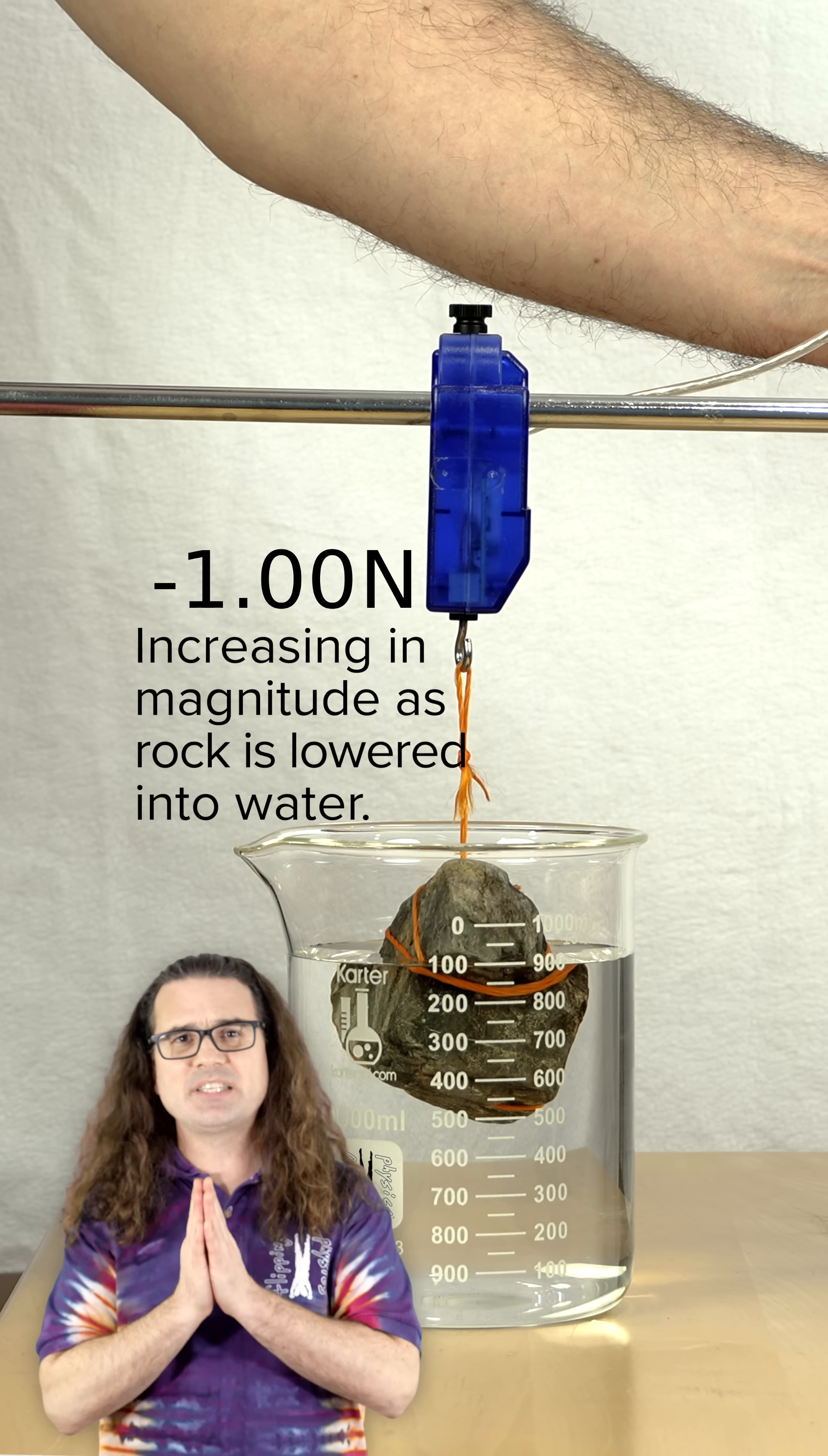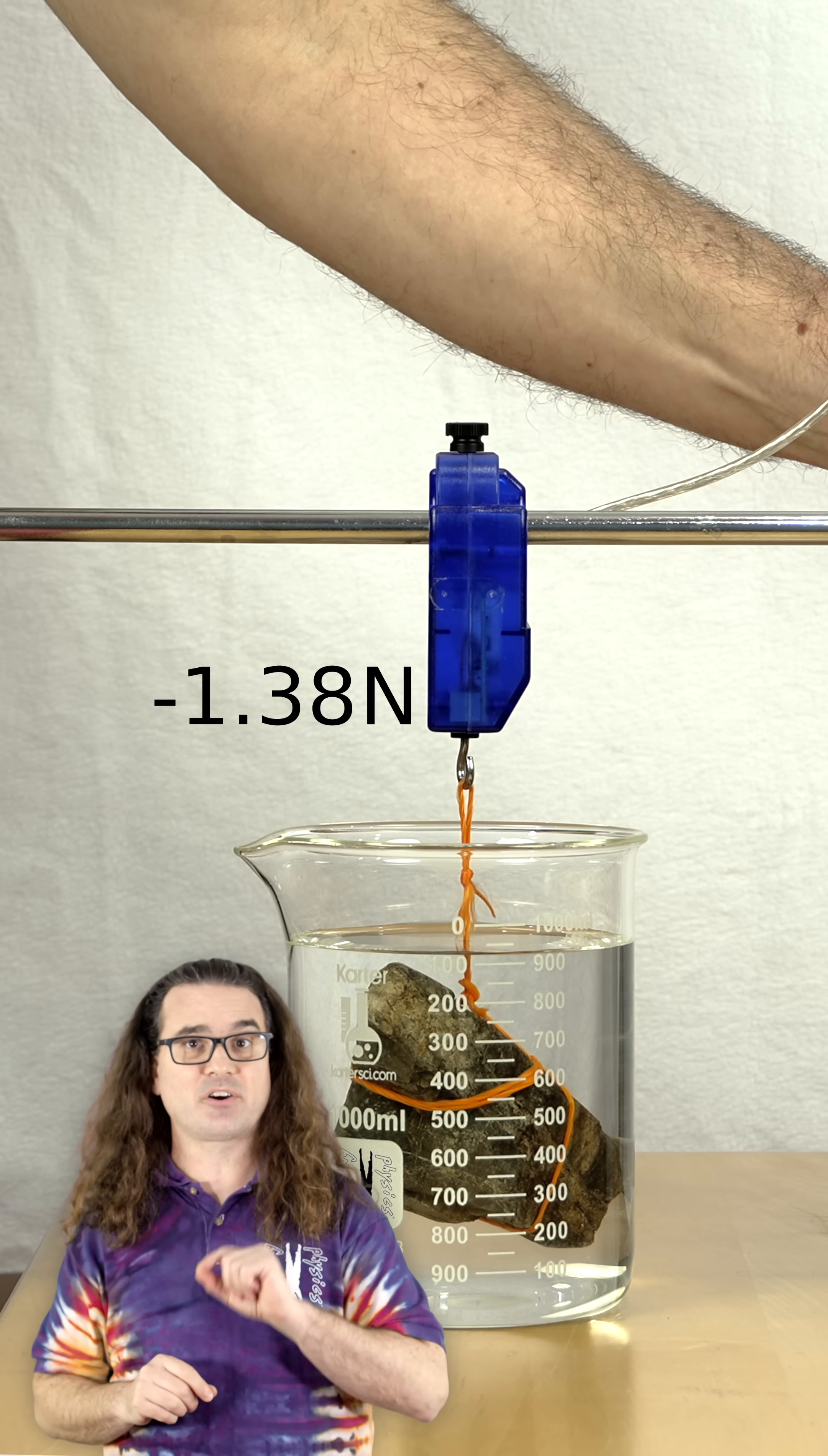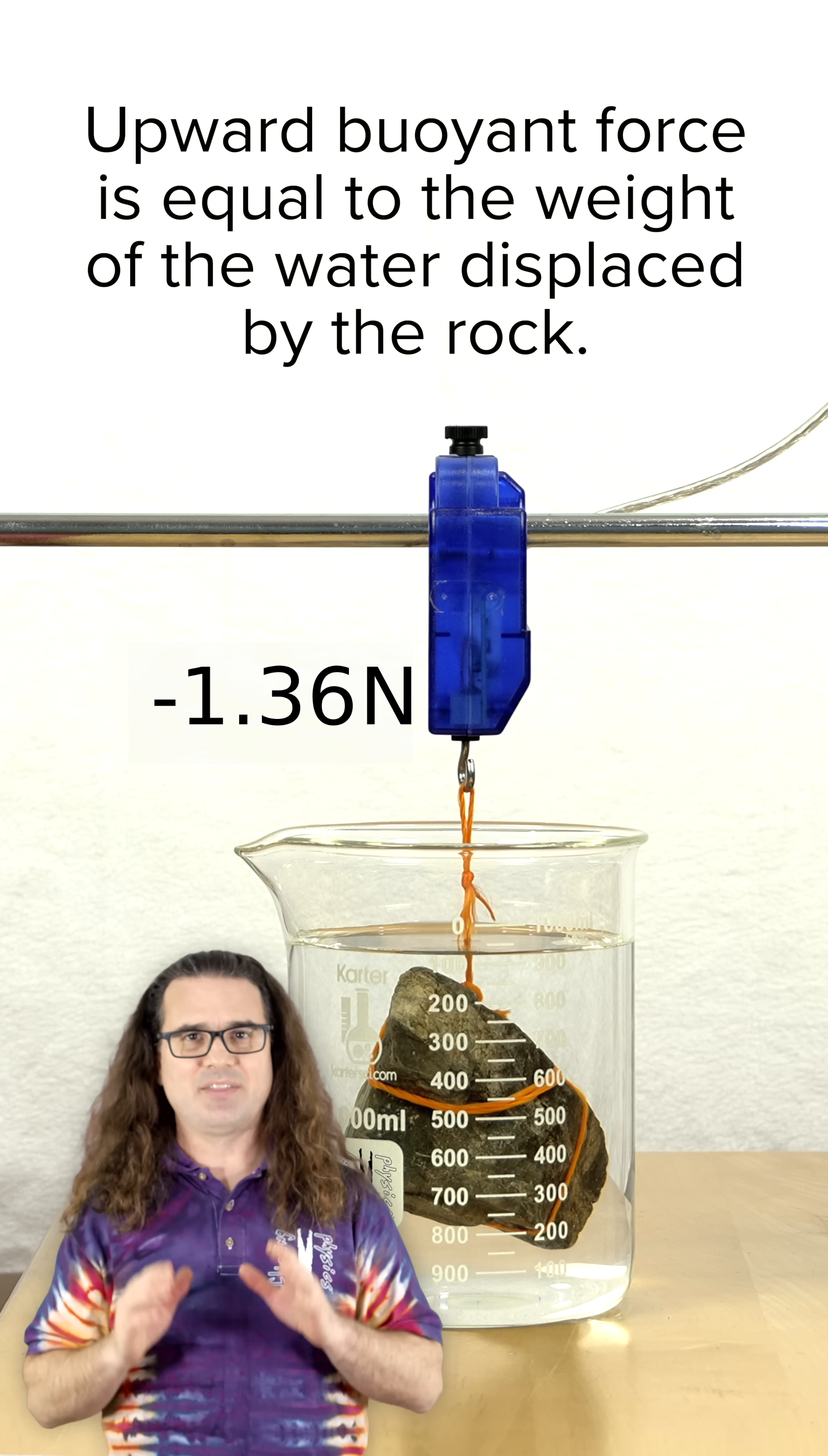A force sensor is measuring the 1.36 Newton buoyant force pushing up on this rock submerged in this beaker of water. The upward buoyant force is equal to the weight of the water displaced by the rock.